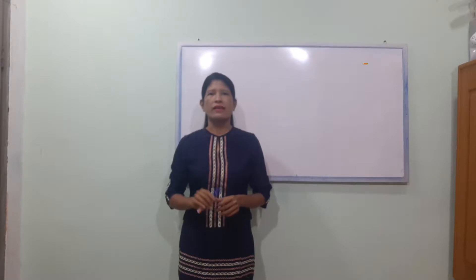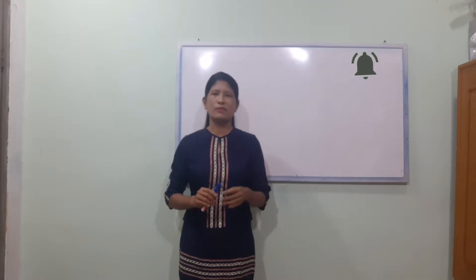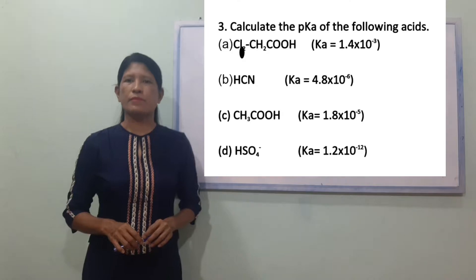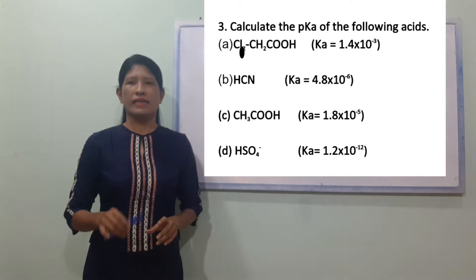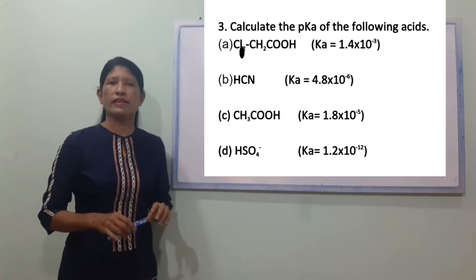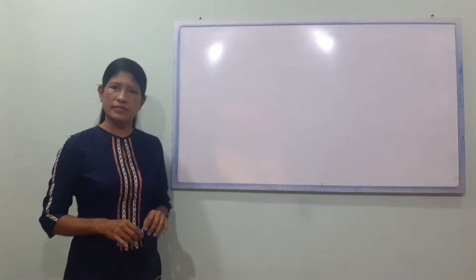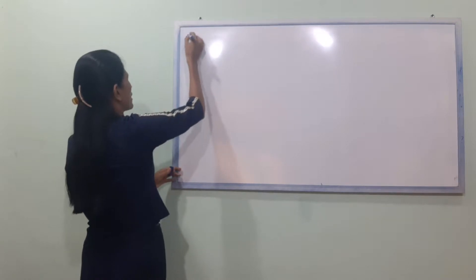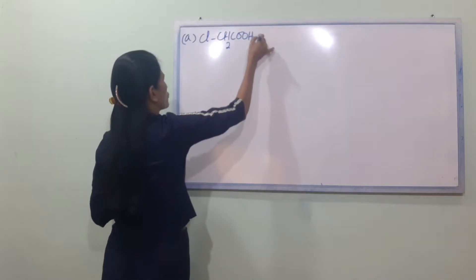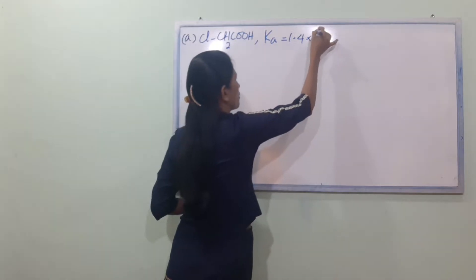We are going to talk about the SCBS and the neutralization of the SCBS. The KAA is the first version of PKA. The first version of the KAA is called PKA. This is CO, CH2, COOH. In this case, the Ka value is 1.4 into 10 power minus 3.